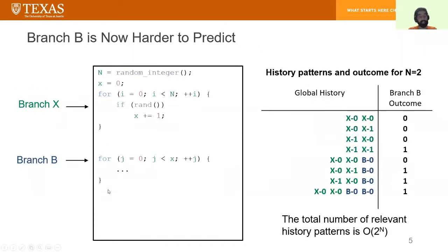Now, let's make Branch B harder to predict by adding a source of noise. When we add Branch X, which guards whether we increment variable x in the first loop or not, now we need to consider all the possible combinations of Branch X being taken or not taken in the history pattern.